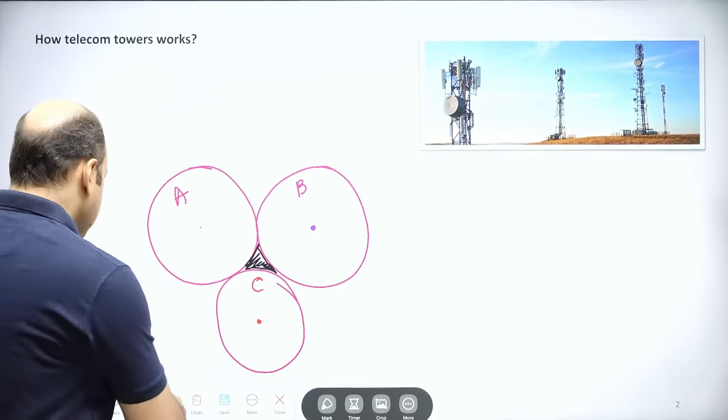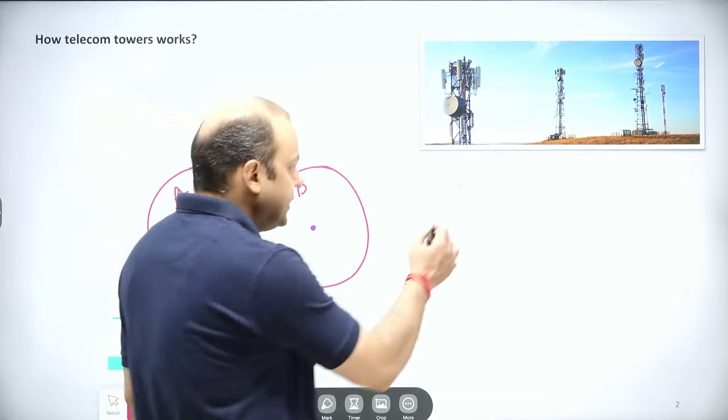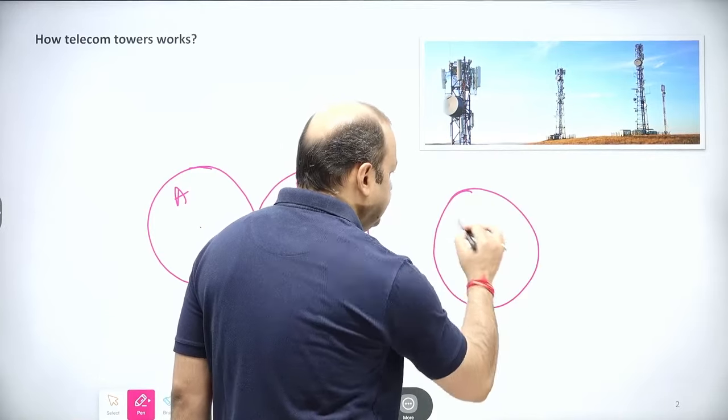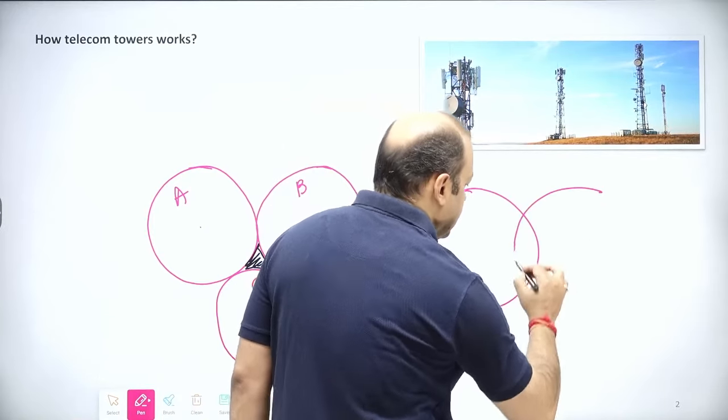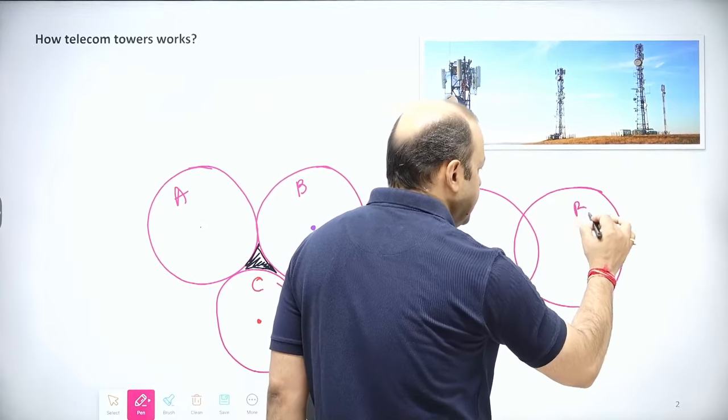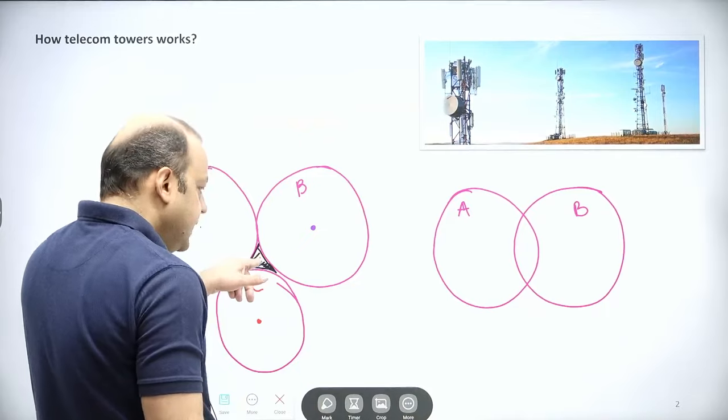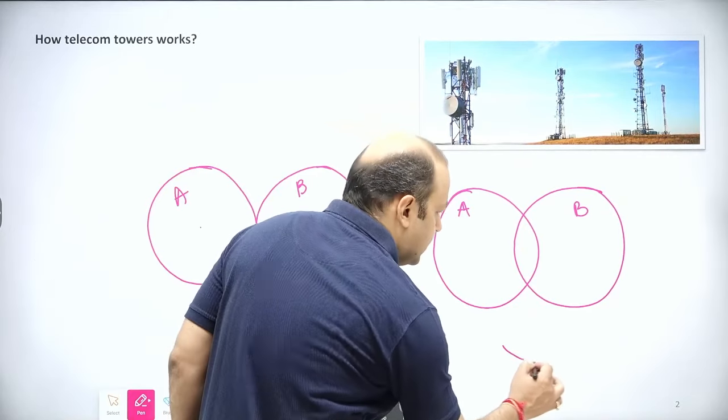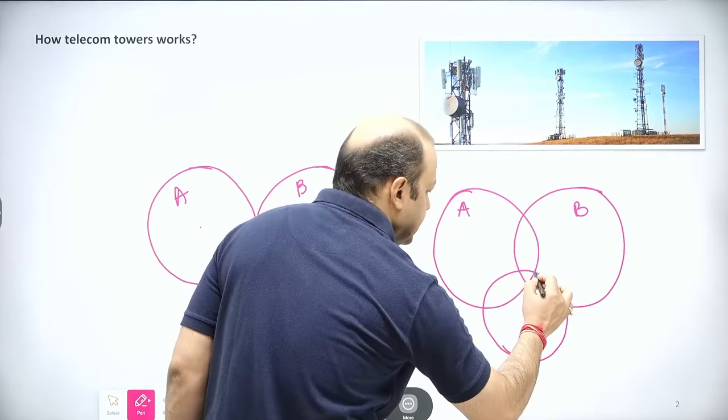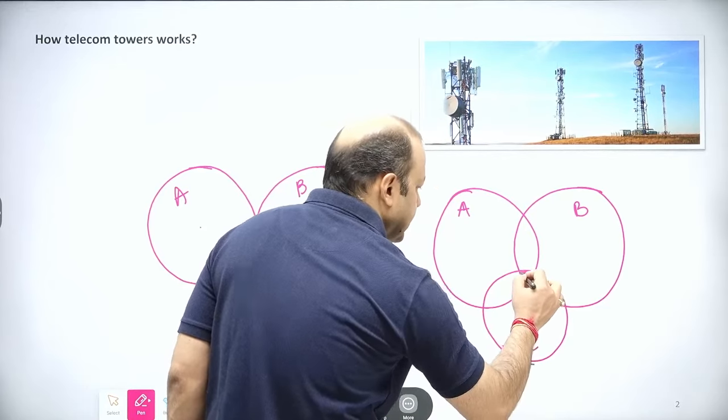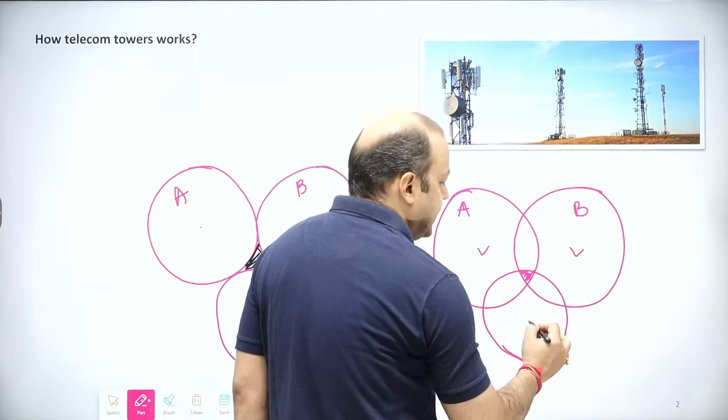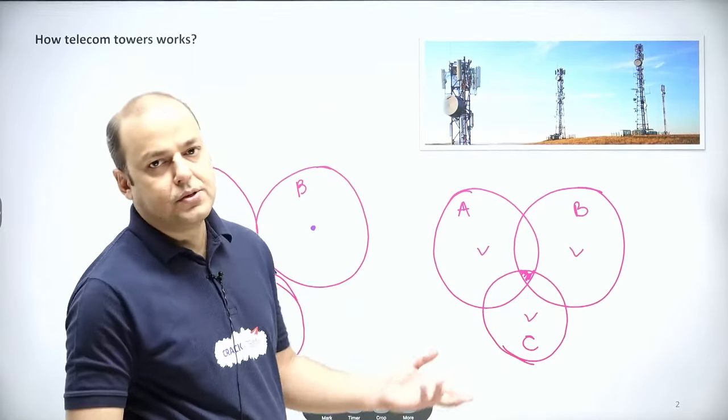So no issues—let us merge these areas. The alternate method would be to create a structure like this. This is again area A, area B, and whatever was left here is now covered. Problem is solved. So we will place tower here, place tower here and here.